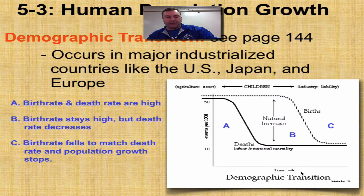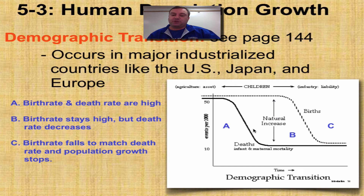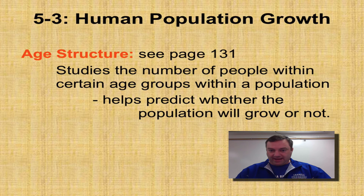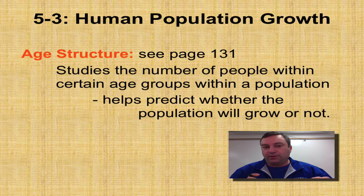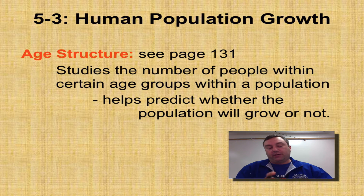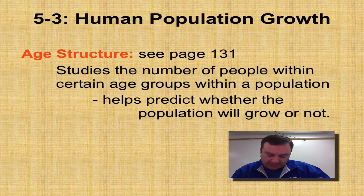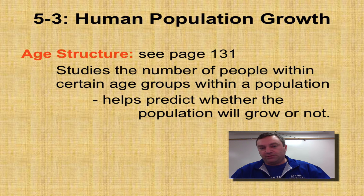Make sure you pay attention to demographic transition — there's a good chance you'll have test or quiz questions on it. Age structure: we've had this before, and you can find it on page 131 in your textbook. This studies the number of people in particular age brackets within a population, broken down into females and males. You're going to use these age structure diagrams to predict if your population is going to grow, if it's stable, or if it's declining.